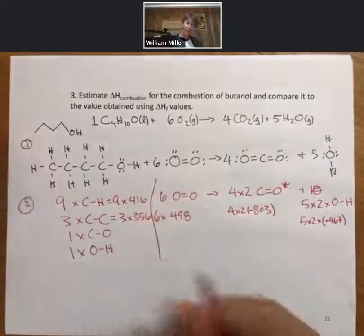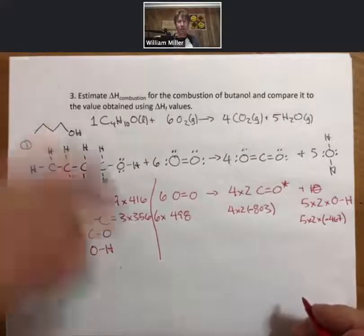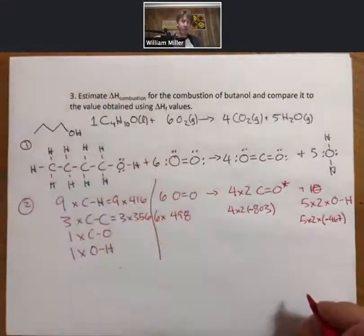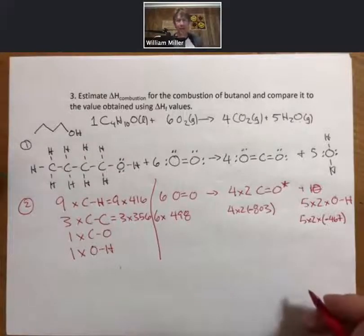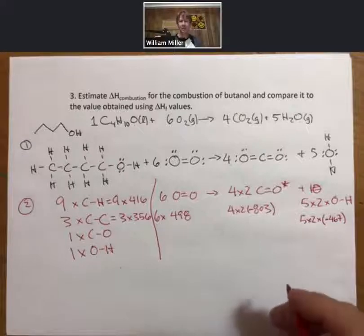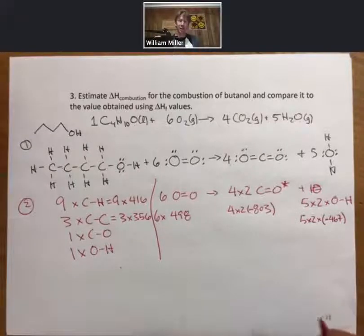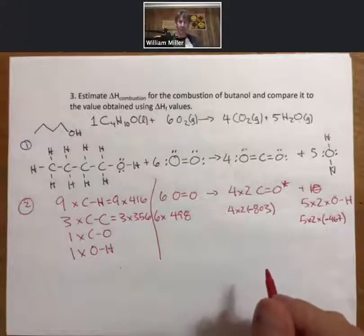Carbon-carbon is 356. What you'll find as you move from book to book in general chemistry is that they're all relatively close regardless of the book, but they're not all exactly the same. That's why in the previous one I had 243 instead of 242.